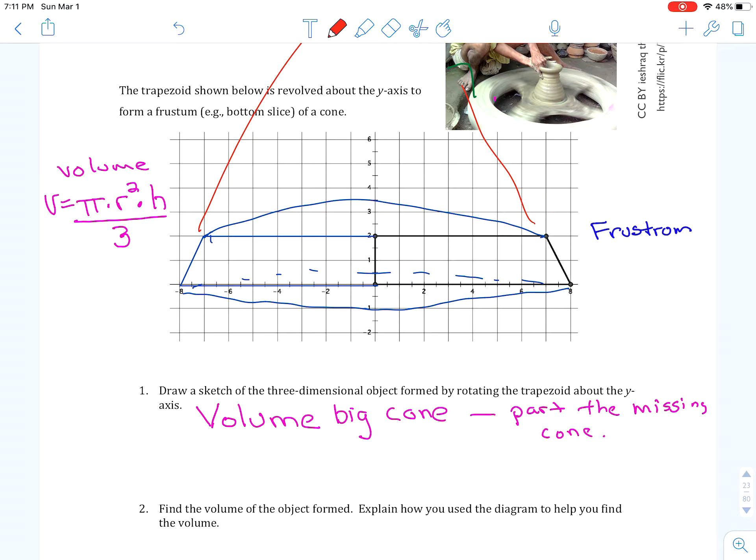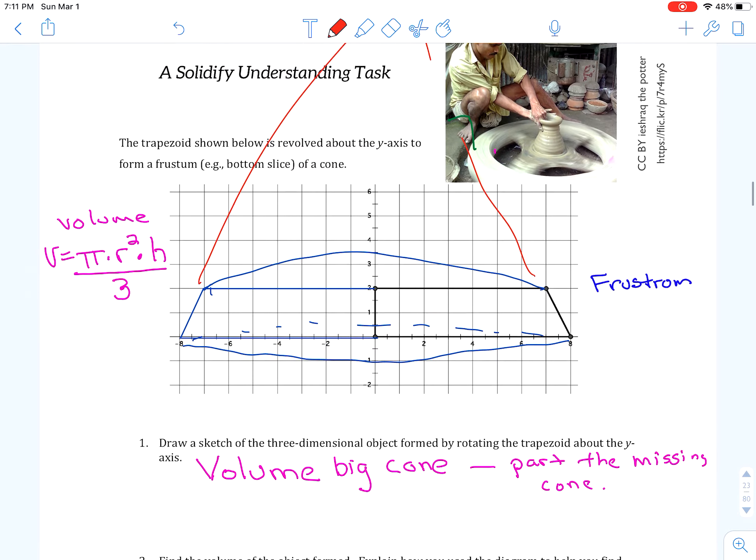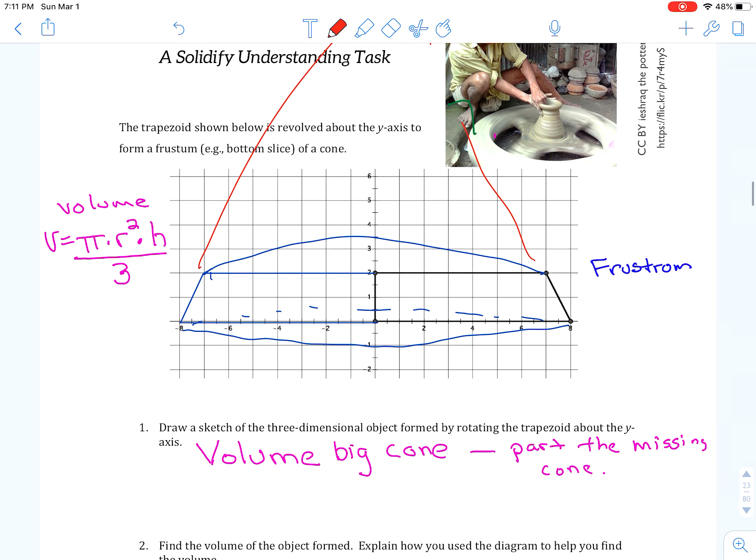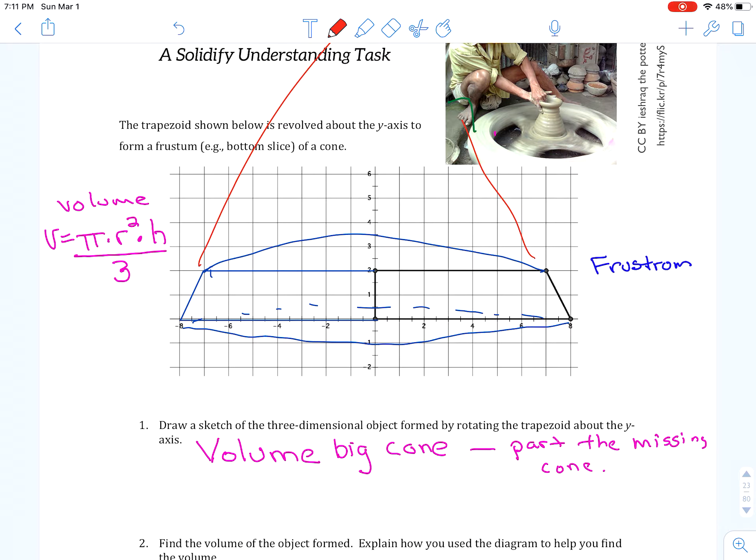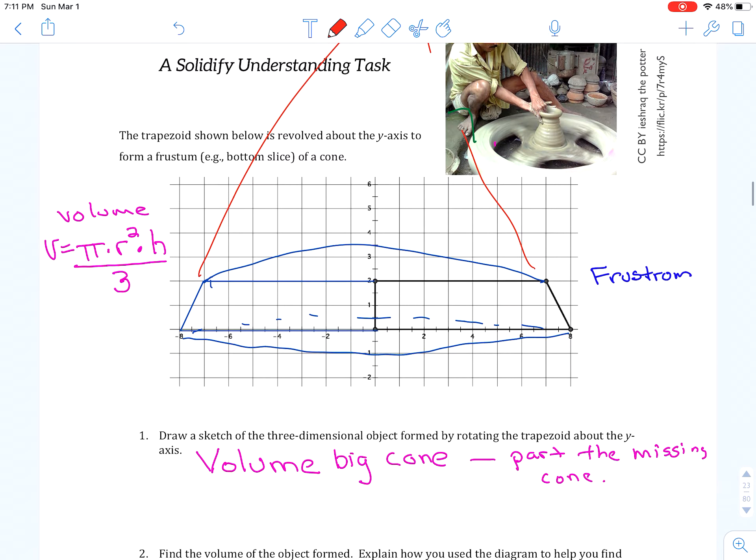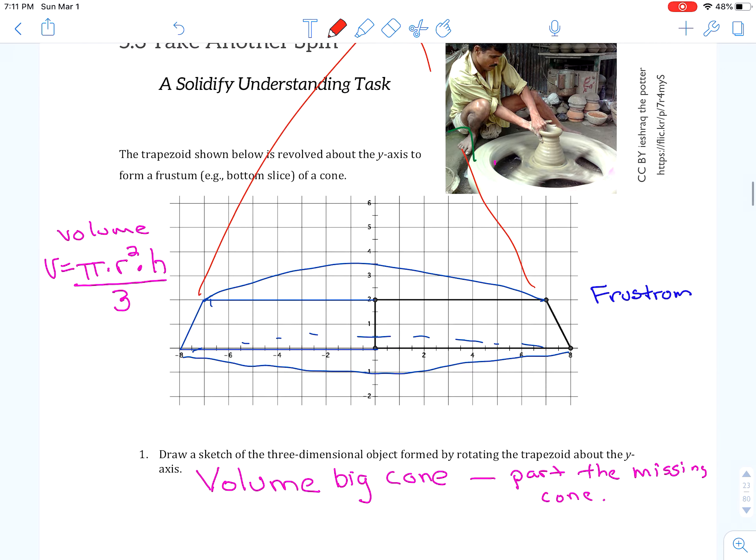Number one. Draw a sketch of a three-dimensional object. Sorry, we already did that. Number two. Find the volume of an object formed. Okay. We have to find the volume of the frustrum. So, I already have this written on here from last class. But, what we're going to do is we're going to find the volume of the whole big cone. And then we're going to subtract this part that was removed. Just think that we cut it off. And then that will leave us with the area. Or, no, I'm sorry. They'll leave us with the volume of the frustrum.